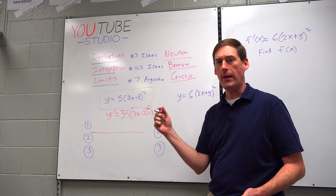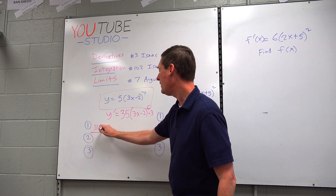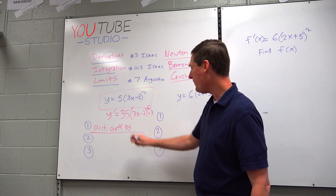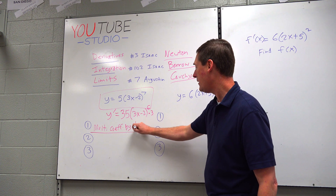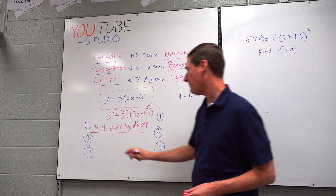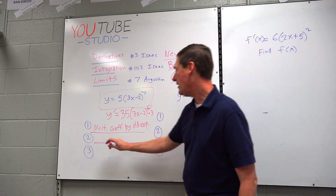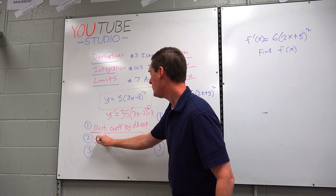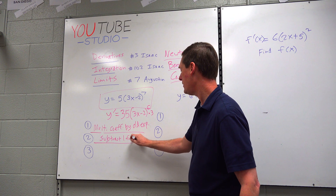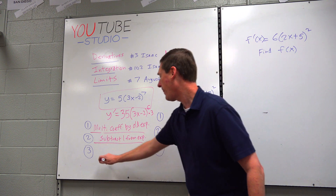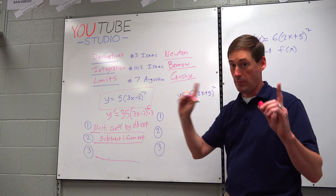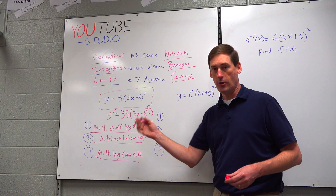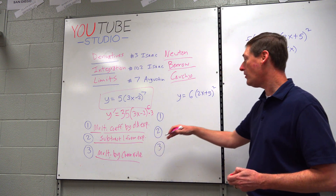Let's really dig into how we do these derivatives, because we take it for granted now. Step one: multiply the coefficient by the original exponent. Step two: subtract one from the exponent. Step three: multiply by the chain rule. Those are the three steps. Now let's see if we can do all this in reverse when we do what's called an anti-derivative — so if 6(2x + 5)² is the derivative of something, where did it come from?